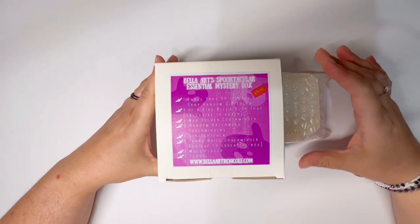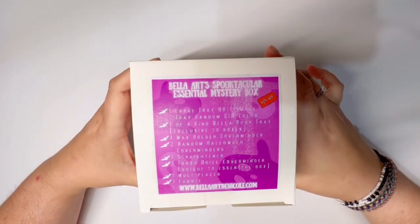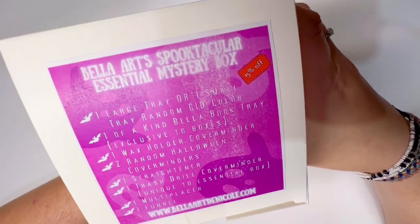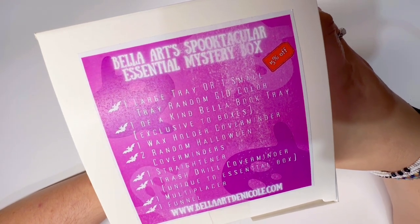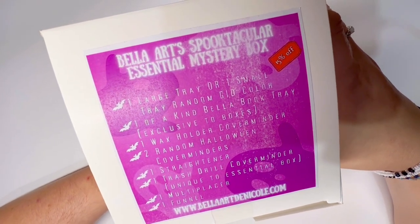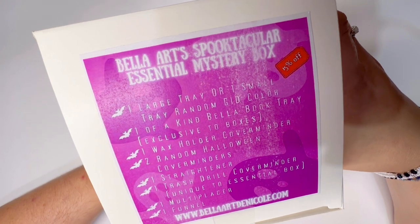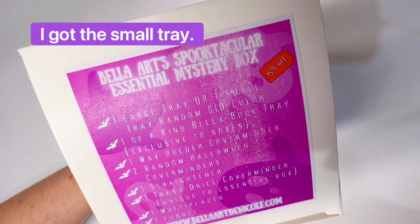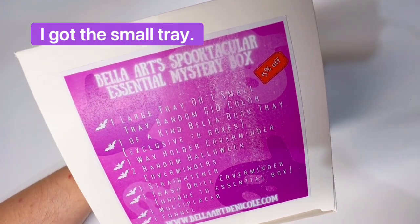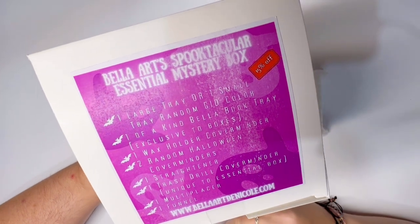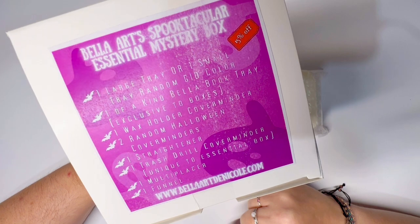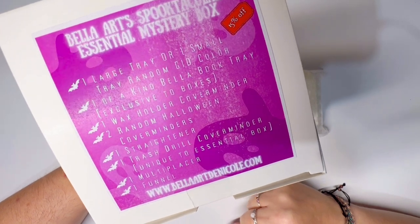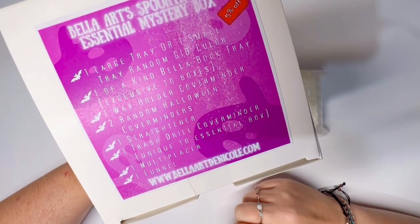Inside of that box we had another box which lists for you everything that was available in the Bella Art Spooktacular Essential Mystery Box. And this again is the smaller one. So it's one large tray or one small tray which is what I did get. There's also one kind of Bella book tray exclusive just to these boxes. There's one wax holder cover minder, two random Halloween cover minders, one trash drill cover minder,